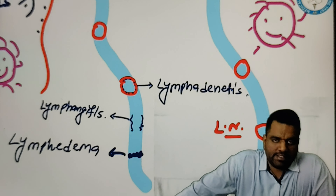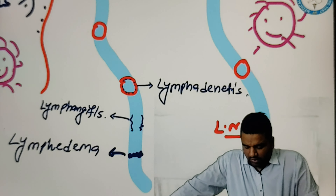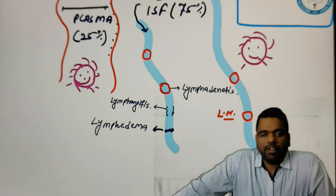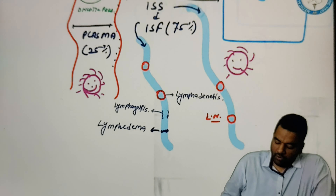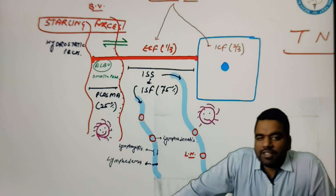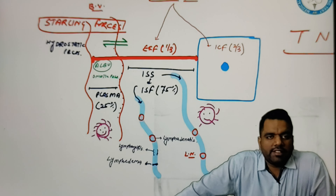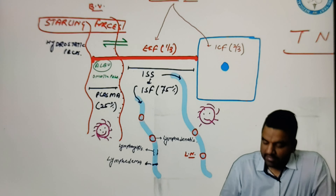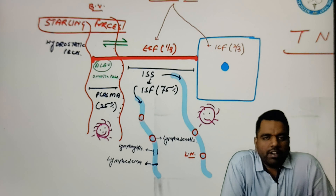Now what could be the abnormalities related to this lymphatic system? Number one, suppose if this lymphatic system gets blocked, this condition can lead to lymphedema. If the walls of these vessels are going to be inflamed, this condition is called as lymphangitis. And if inflammation of the lymph nodes actually happens, this condition we call as lymphadenitis. So I hope now you can understand the meaning of lymphedema, lymphangitis, and lymphadenitis.